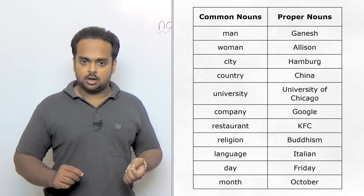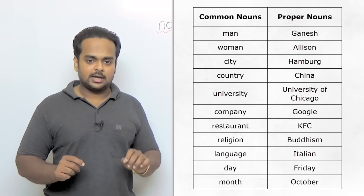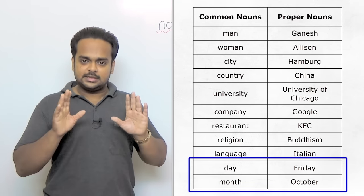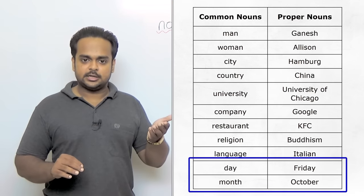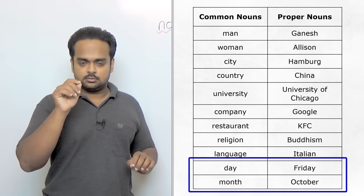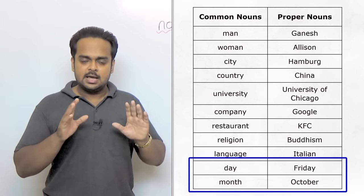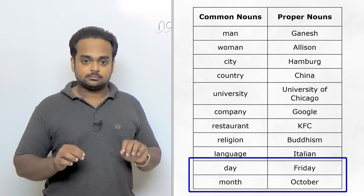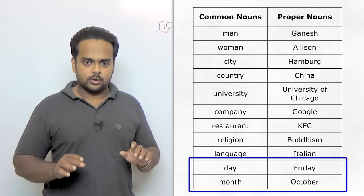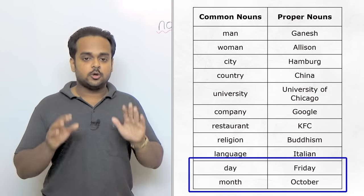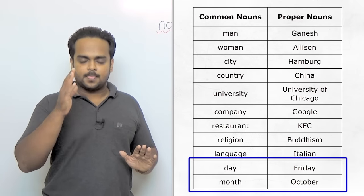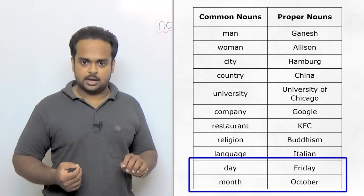There are more examples on the screen, but I want you to focus on the last two: day and month. With the days of the week—Sunday, Monday, Tuesday, Wednesday, Thursday, Friday, Saturday—we always write them with the first letter capitalized because they are proper nouns. And it's the same thing for months as well. From January to December, all months are written with a capital first letter. So please don't forget this rule. Proper nouns are always capitalized or always written with the first letter capitalized.